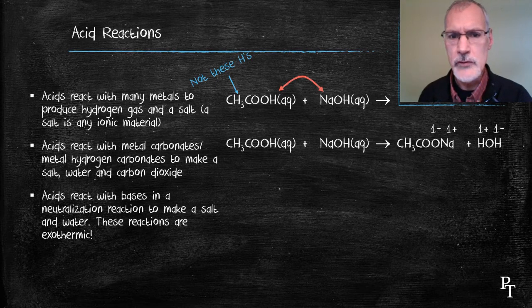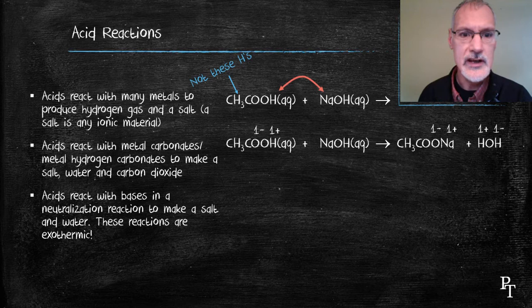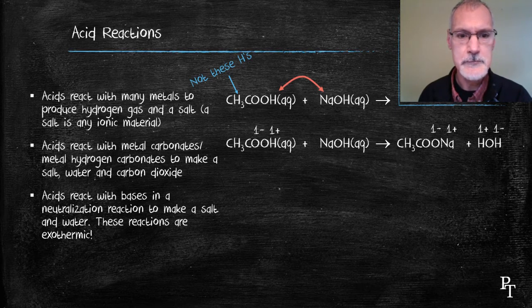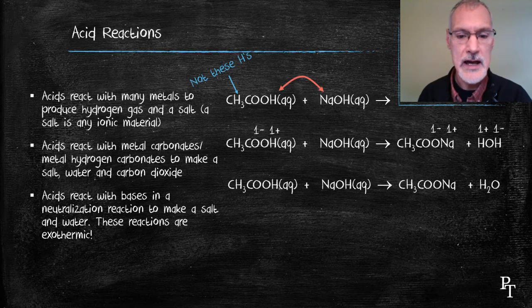Now, acetate is not one of those ions you may be familiar with, but looking at the reactant, knowing that hydrogen is plus one, I was able to deduce that the acetate ion had a charge of minus one. So, I've completed their formulas here and now proceed to balance them.